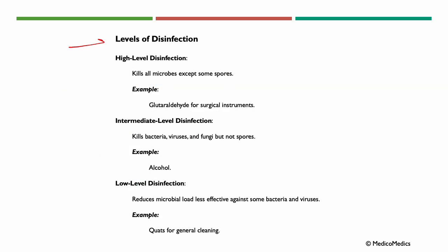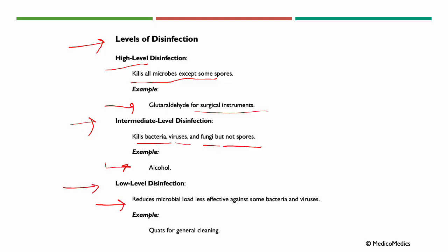There are some levels of disinfection. High-level disinfection kills all microbes except some spores — example: glutaraldehyde for surgical instruments. Intermediate-level disinfection kills bacteria, viruses, and fungi, but not spores — example: alcohol. Low-level disinfection reduces microbial load but is less effective against some bacteria and viruses — example: quats for general cleaning.